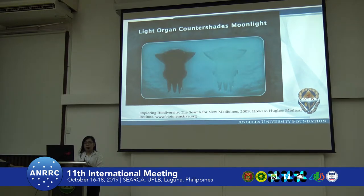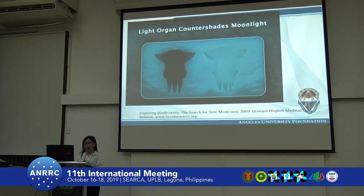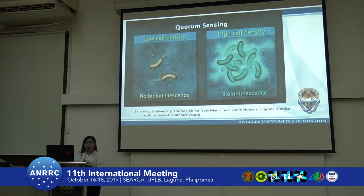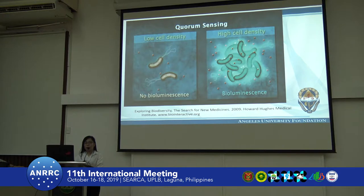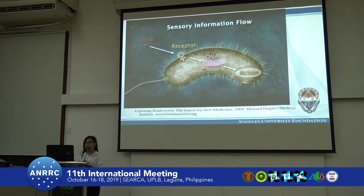On the other hand, the bobtail squid is using the luminescence to lure their predators so that they will not be eaten. Bioluminescent bacteria produce their luminescence via quorum sensing, meaning they need a sufficient number in order for the species to glow. In the process, there is a signal and a receptor so that the DNA will be able to produce a metabolite to produce the luminescence.